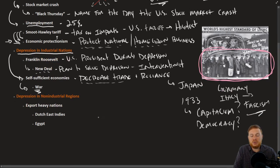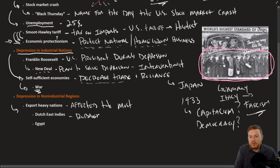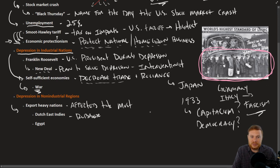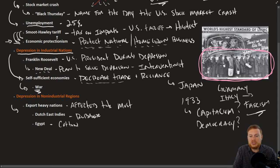For non-industrial nations, the Depression hit them especially hard — particularly those that were export heavy. For example, the Dutch East Indies produced rubber, but when Ford Automobiles had to fire half their workers, they no longer needed that rubber. Egypt was a production center of cotton, but textile factories were being shut down throughout the industrial world, so those commodities were no longer needed. Export-heavy, non-industrial nations therefore also felt a severe economic downturn due to the Depression.